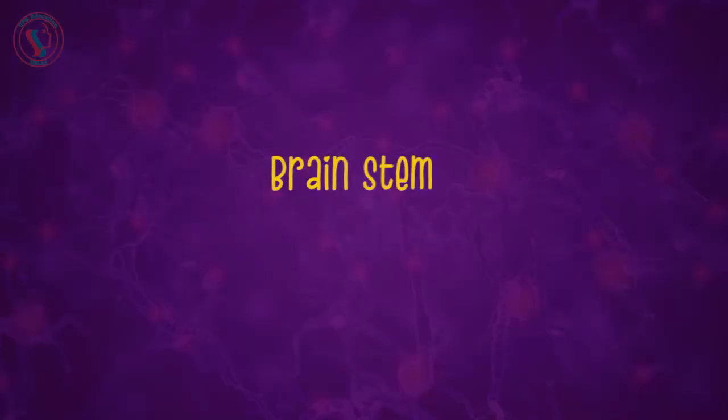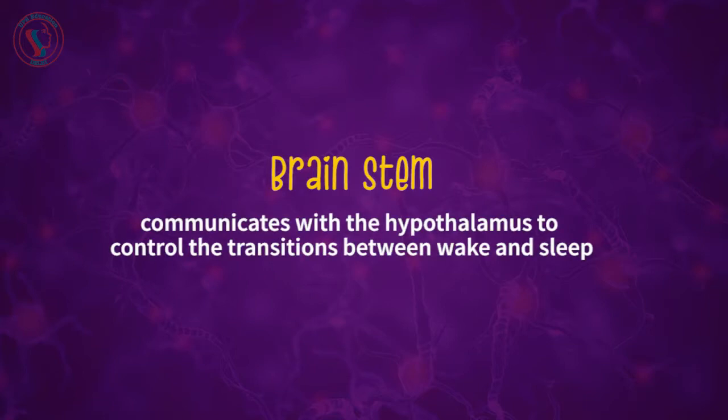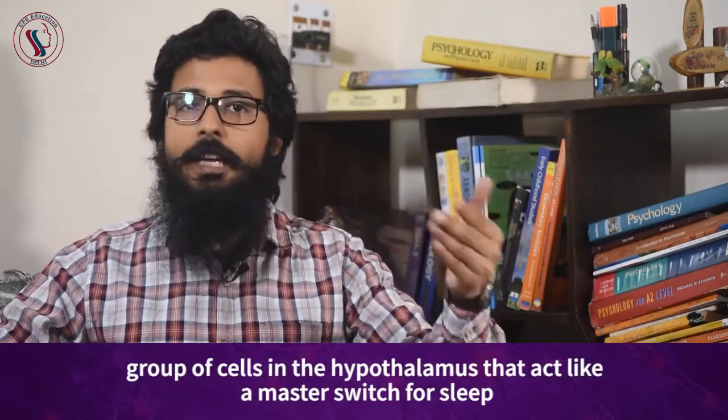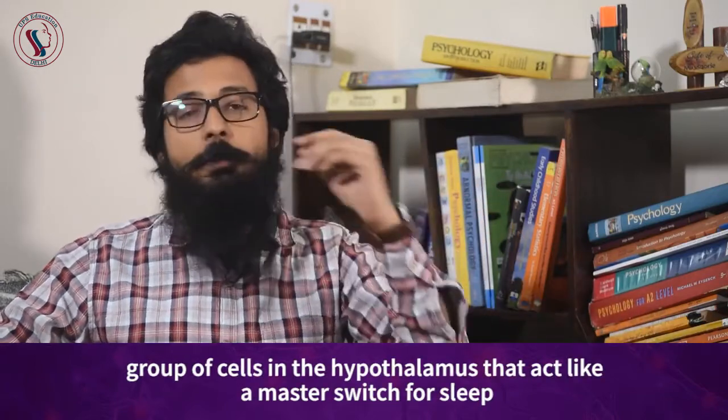The first organ I want to discuss is the brain stem. The brain stem communicates with the hypothalamus to control the transition between wakefulness and sleep. The ventrolateral preoptic nucleus — in short, we call it VPN — is a group of cells in the hypothalamus that acts like a master switch for sleep.